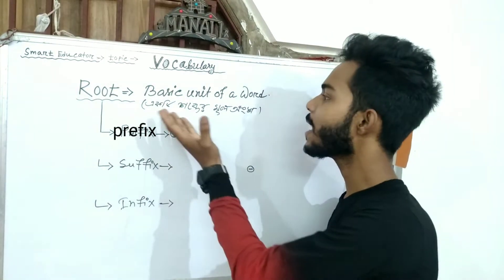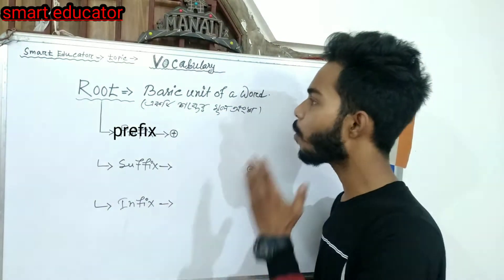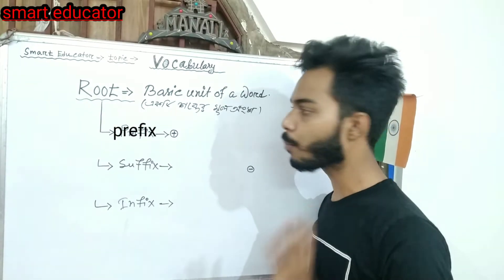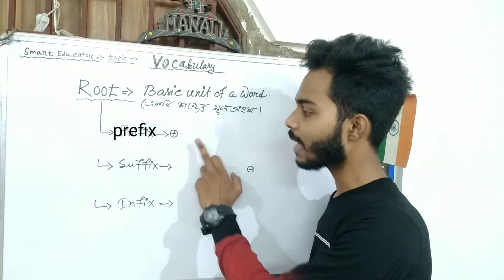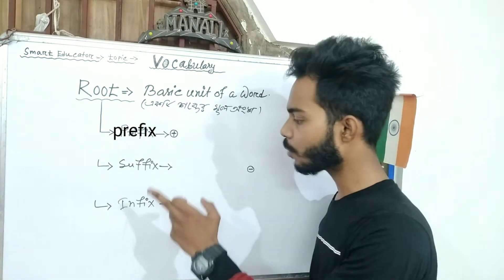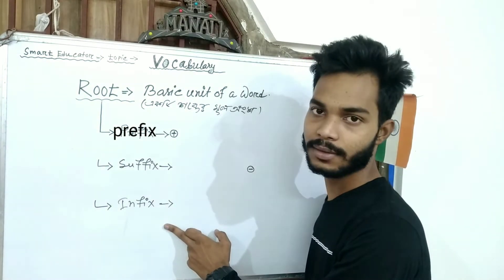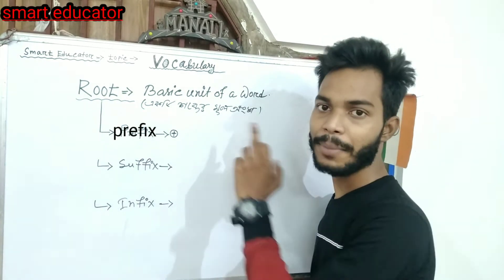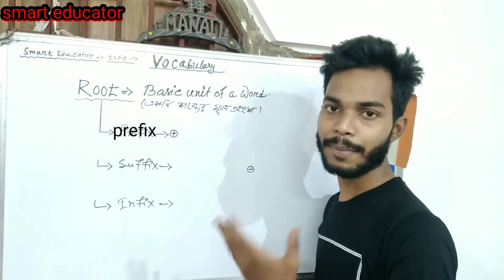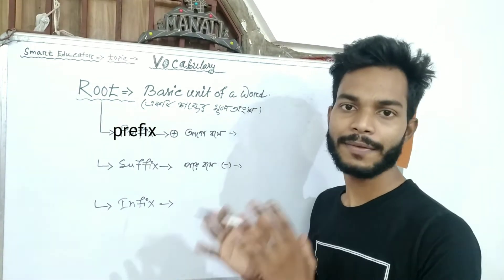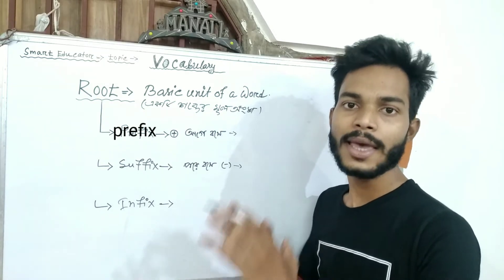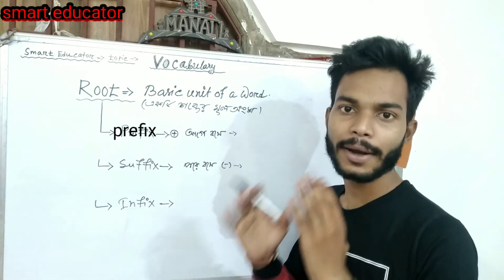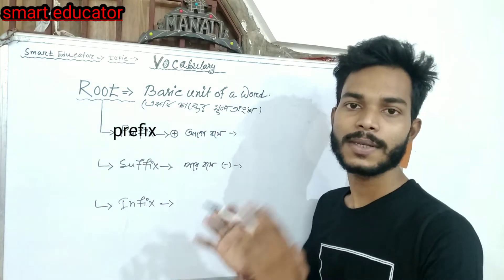There is a single root word at the center. The root has a prefix, suffix, and infix. What is a prefix? A prefix is a unit added before the root word. If you look at the root, the concept becomes clear.